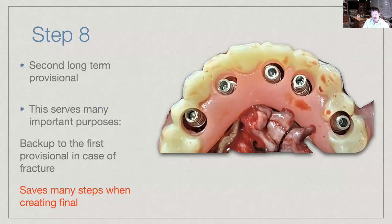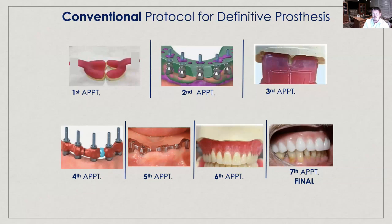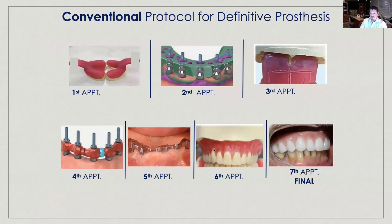Step eight: we make a second long-term provisional. This is extremely important and is another major advantage of using digital — you have a backup device in case the first breaks. More importantly, this second provisional saves many steps when creating the final restoration. With a conventional approach, you would need to take implant impressions, create an implant model, create a wax rim, develop a bar, and then create the final device. Having the second long-term provisional eliminates several of those steps.